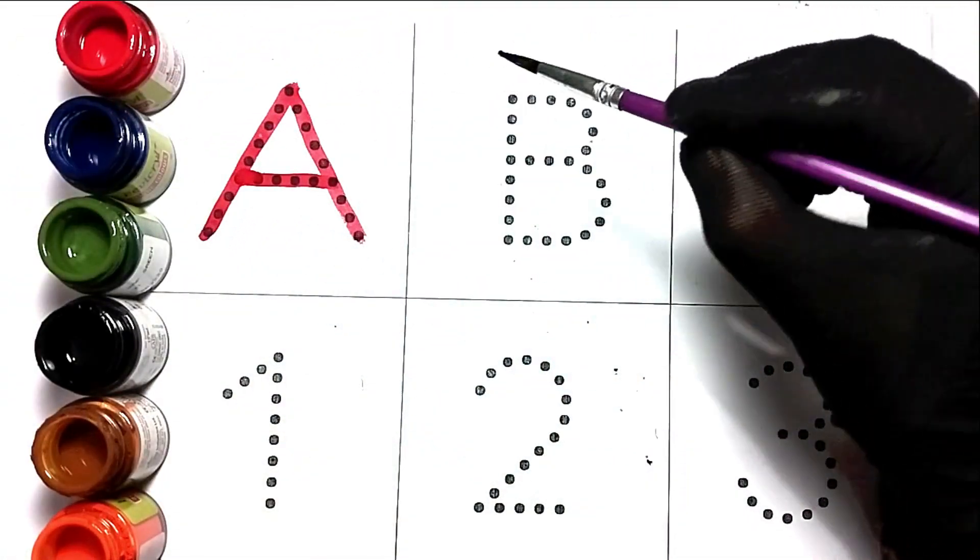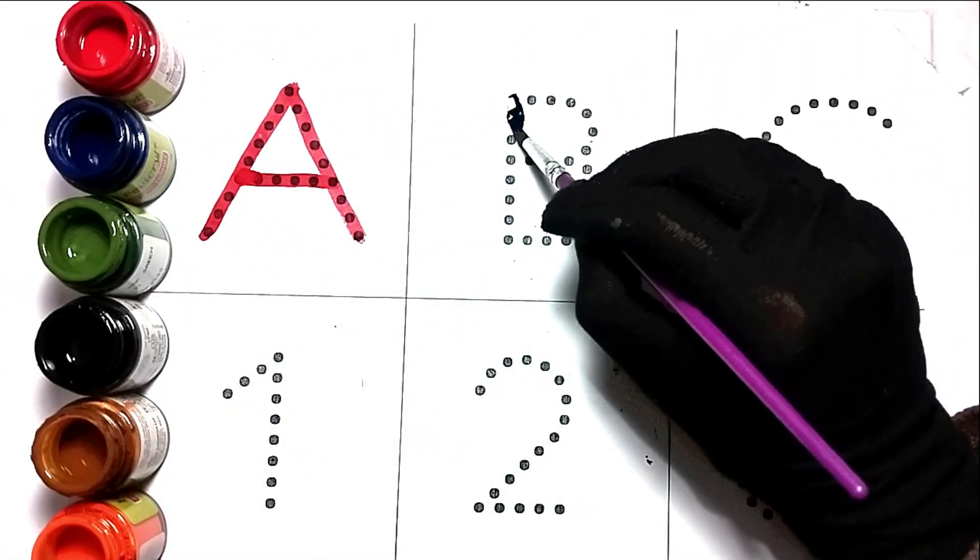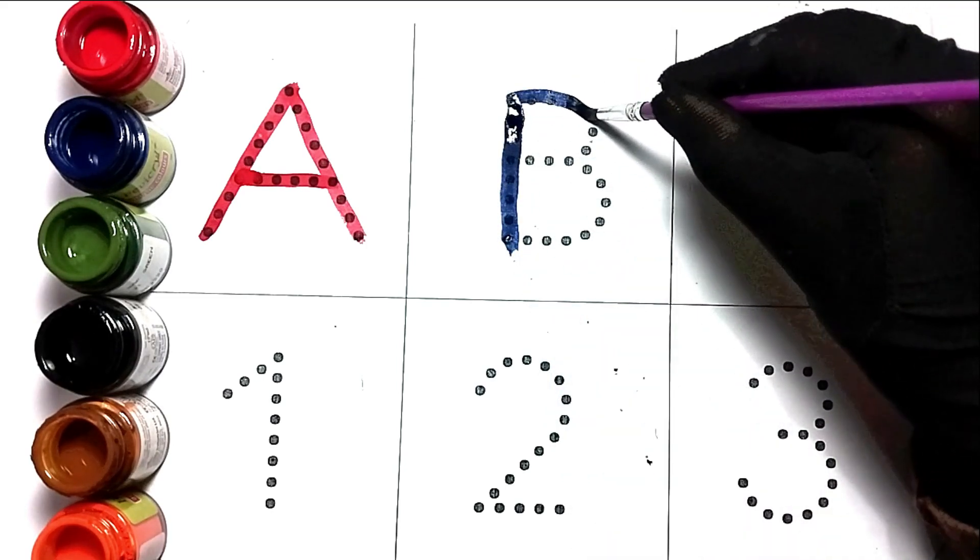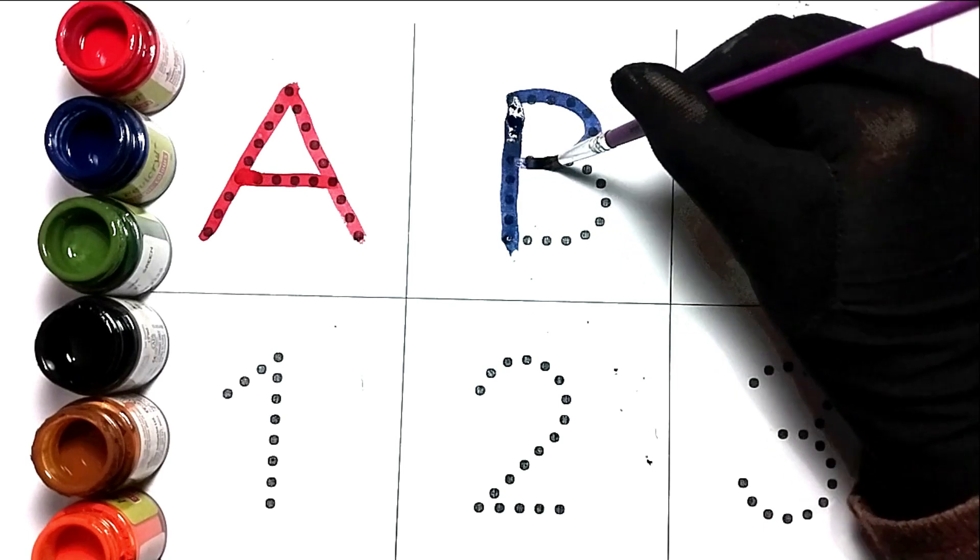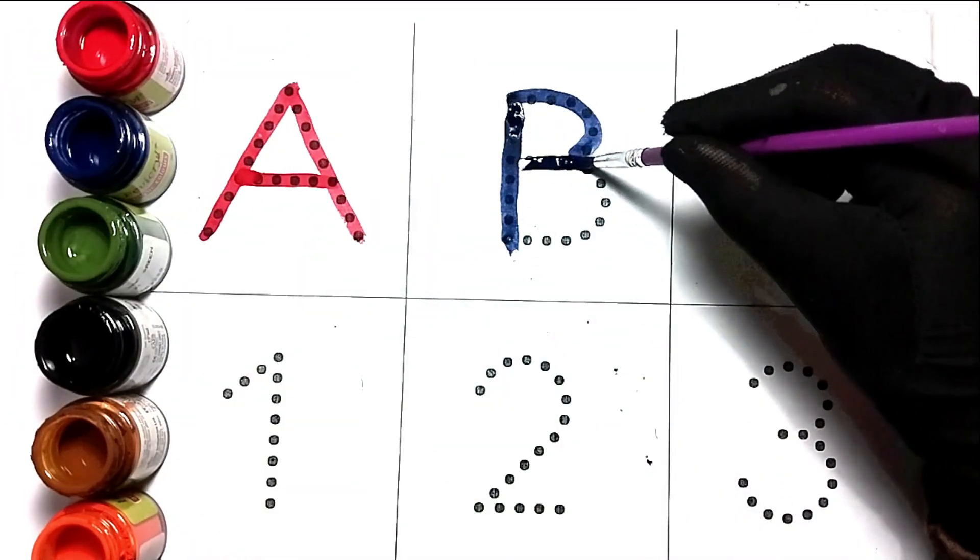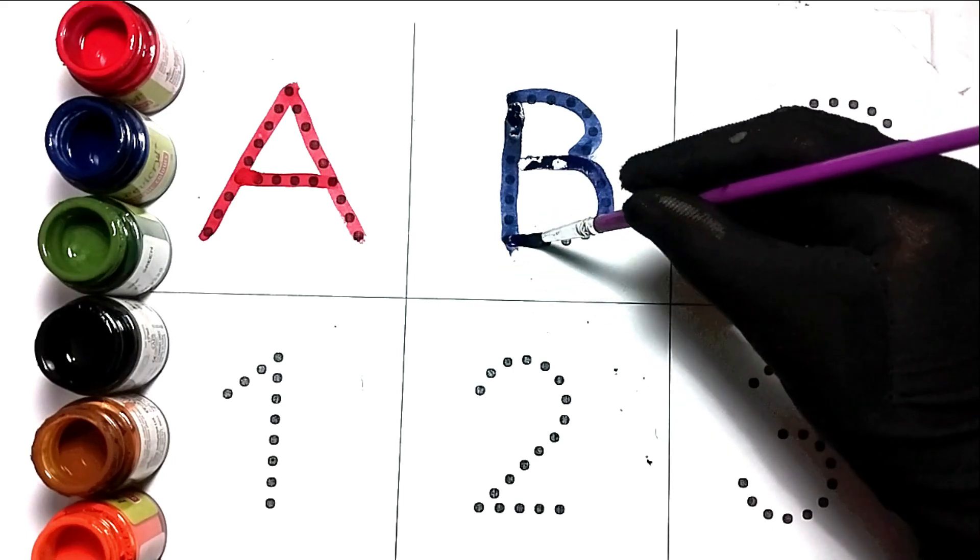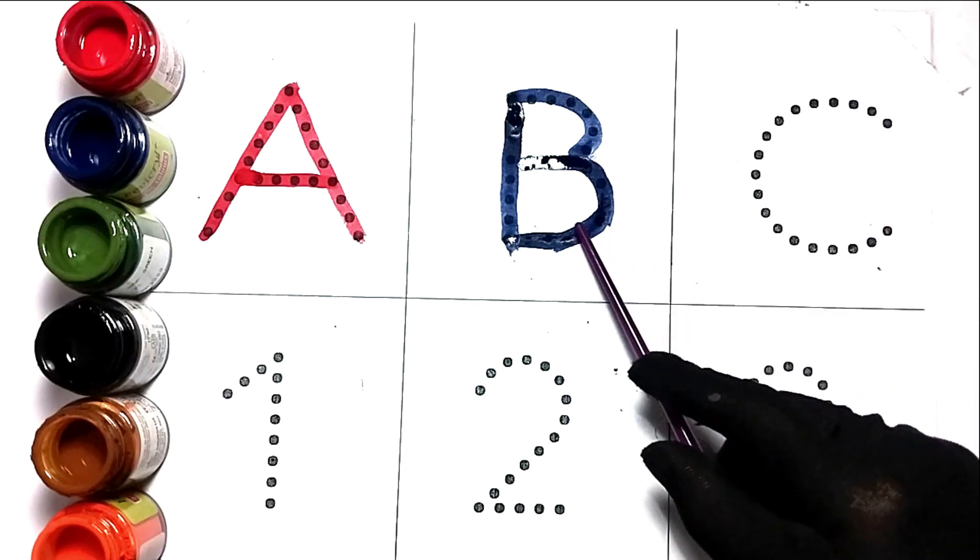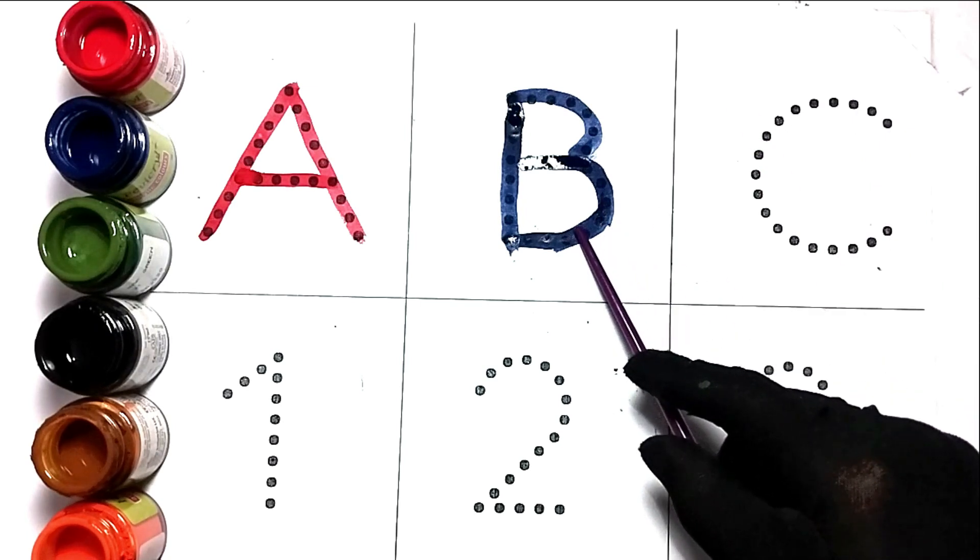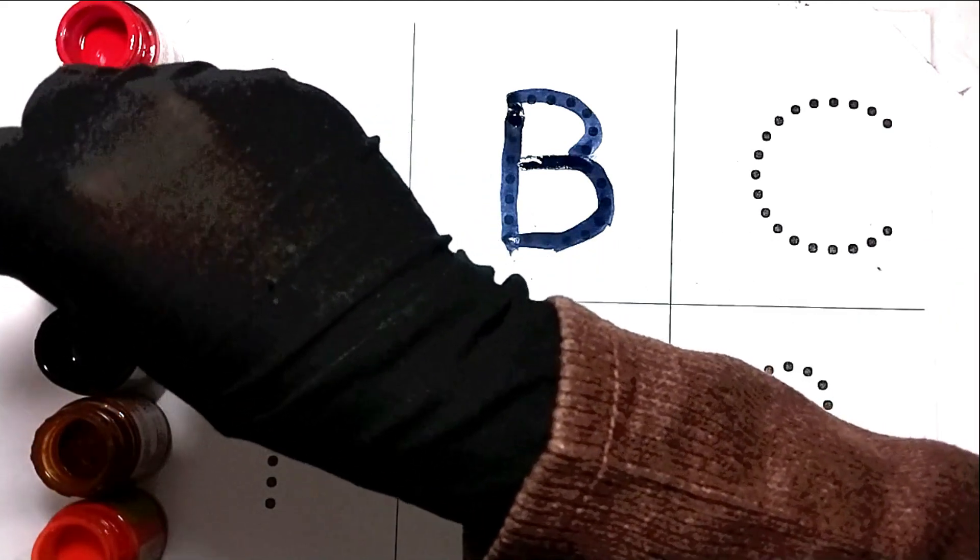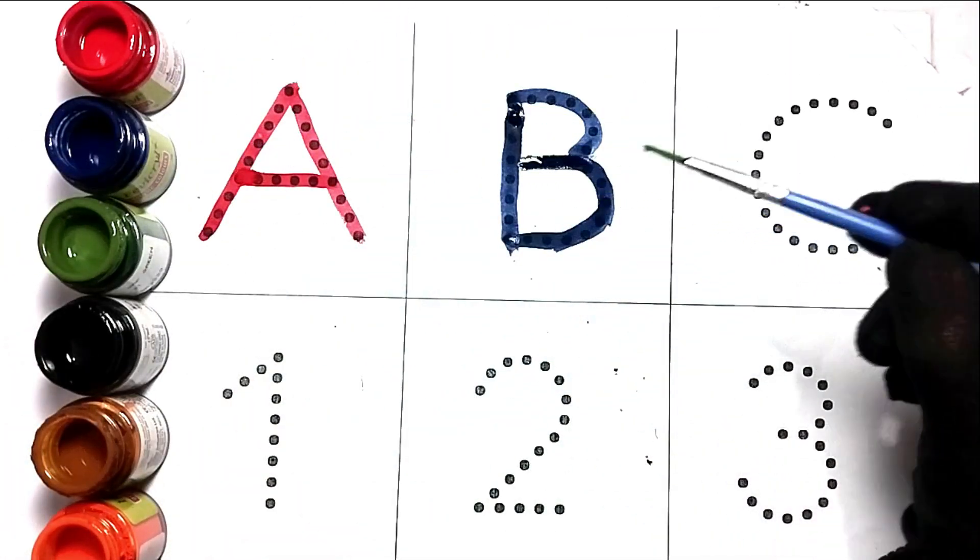Blue color. B, B for banana. B for banana. Green color.